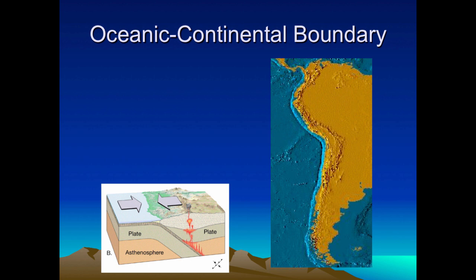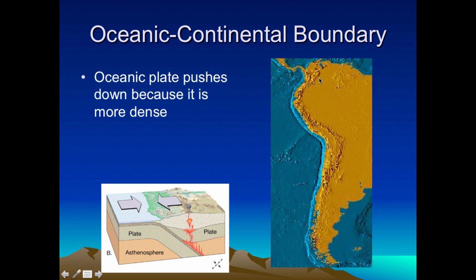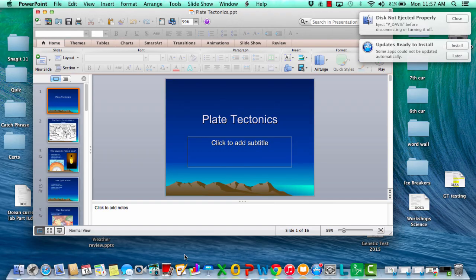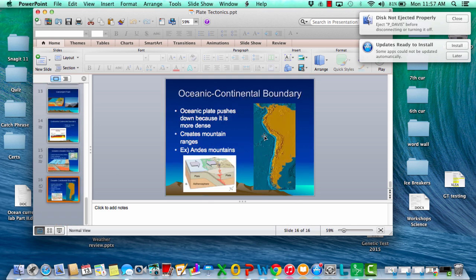The last type is the oceanic-continental boundary, where thick continental crust collides with oceanic crust. Because the oceanic plate is more dense, it gets pushed underneath the continental crust. This can create mountain ranges and volcanoes, such as the Andes Mountains along the west coast of South America. From space you can see the trench where the oceanic plate is being pushed down into the asthenosphere — this is occurring between the South American plate and the Nazca plate.